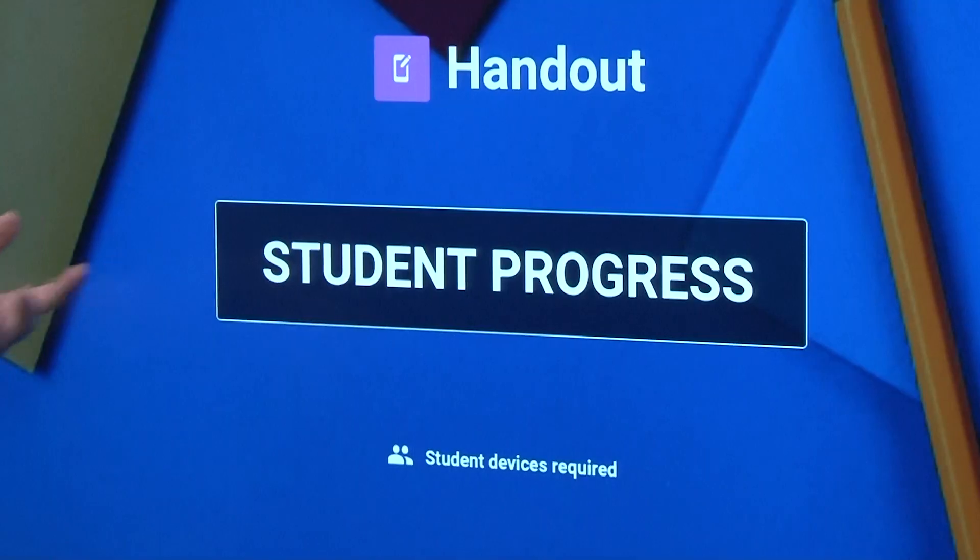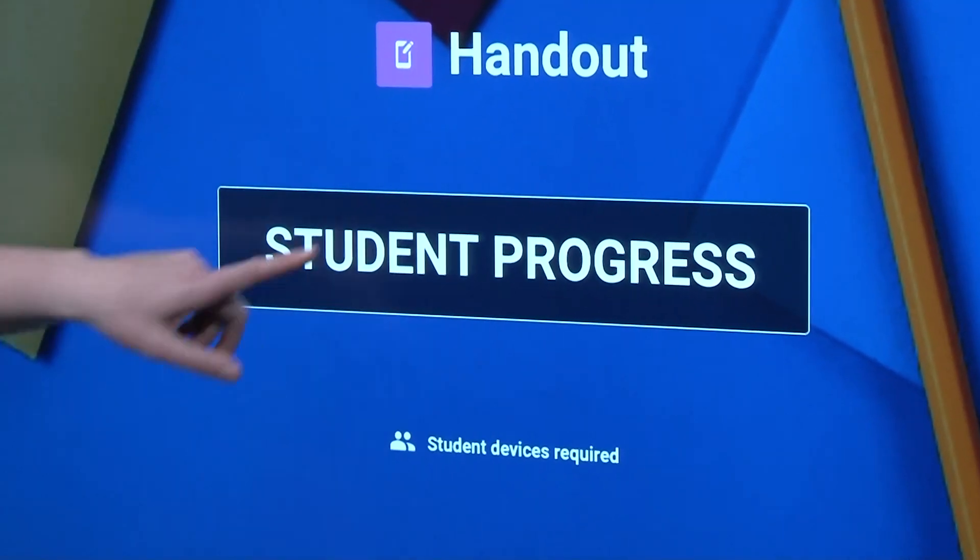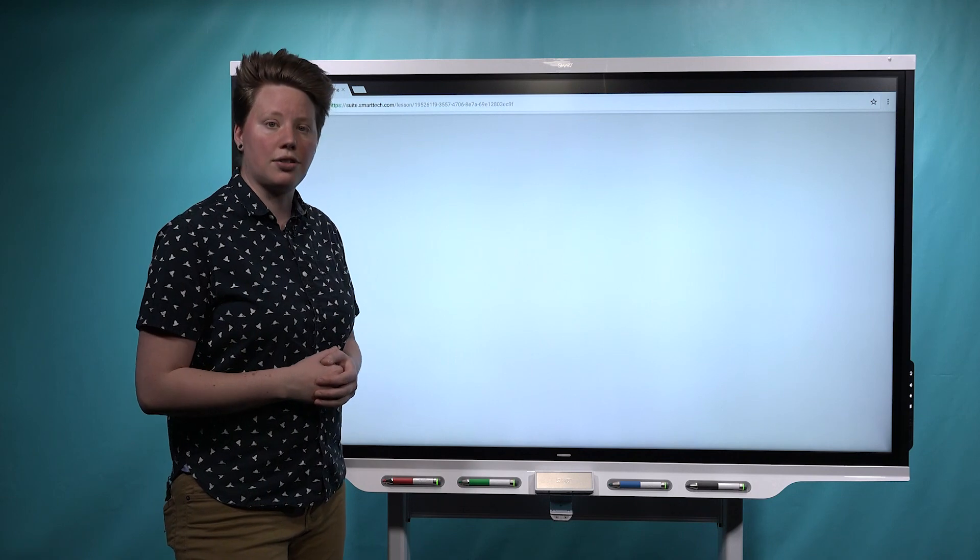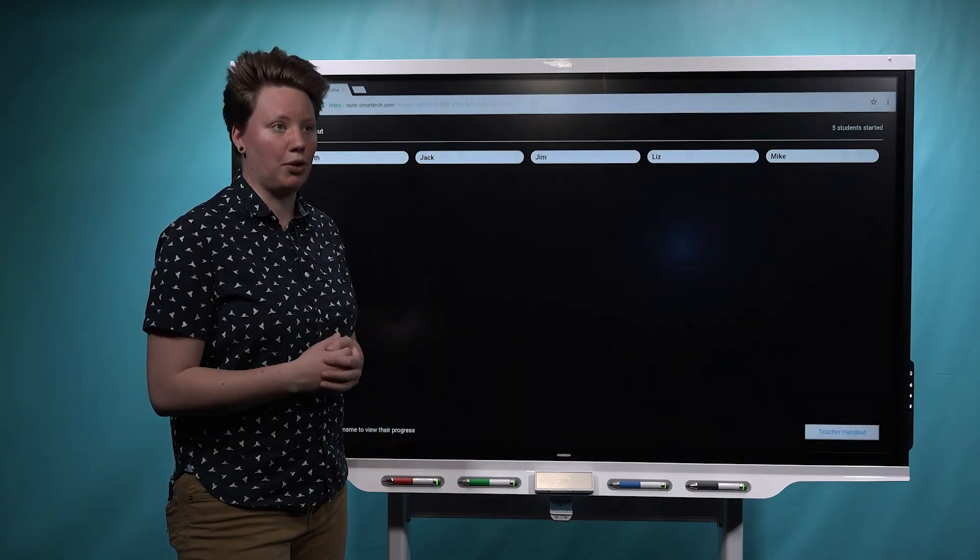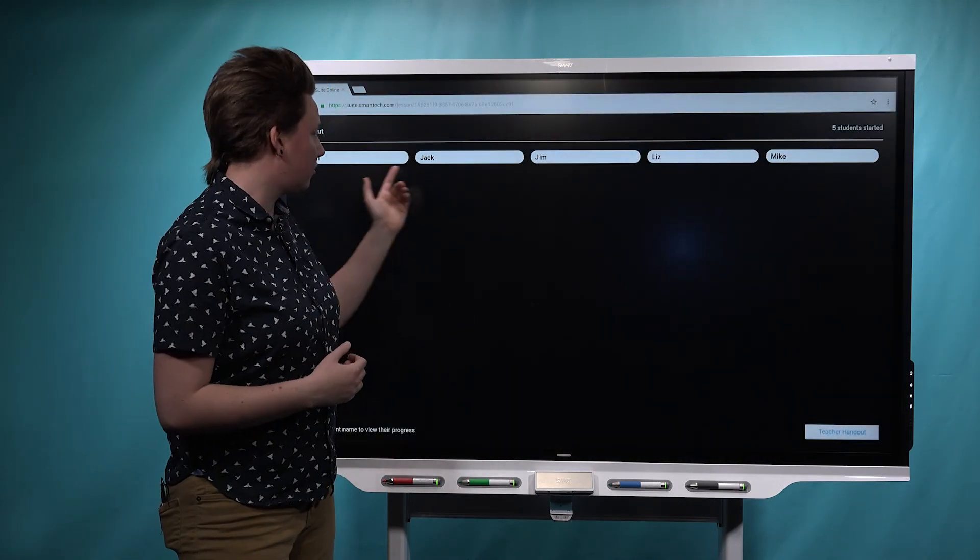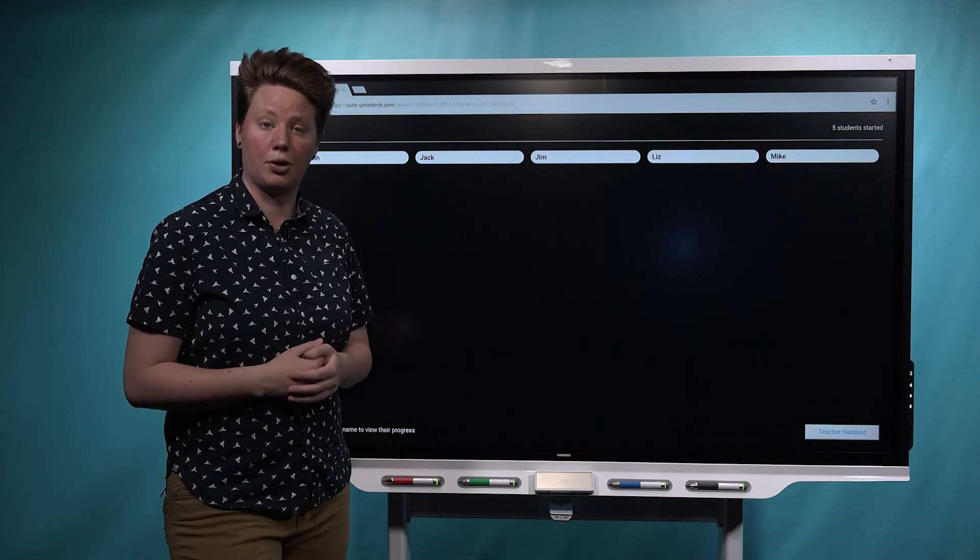The first thing you'll notice here is a new button labeled Student Progress. So if you click on that button, you'll actually open up a new teacher dashboard, which allows you to see all of the students who've connected to the activity and started working on it.